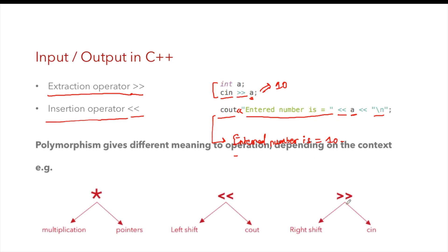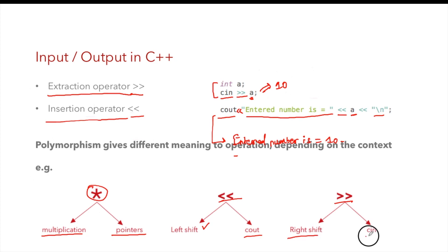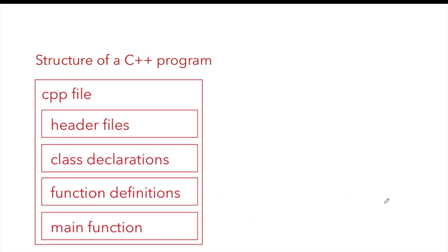Revisiting polymorphism: it gives different meanings to the same operation depending on context. For example, the asterisk (*) is a multiplication operator but was also used for pointers in C — that is polymorphism. The left shift operator (<<) is a bitwise operator in C and C++, but when used with cout it works as an insertion operator. Similarly, the right shift operator (>>) when used with cin works as an extraction operator.